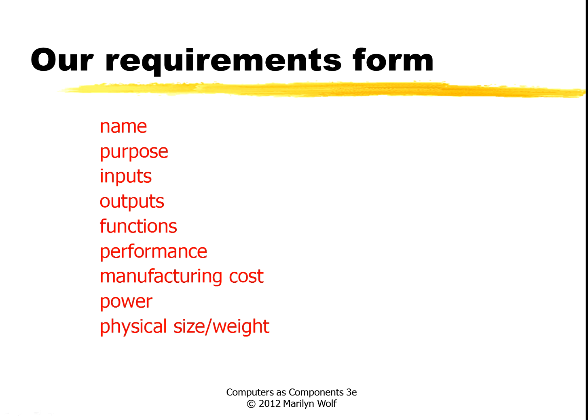The name — just a very simple name so we all know what we're talking about. The purpose: what does this thing do in simple terms? What are its major inputs? What are its major outputs? And what functions does the system perform to take the inputs and generate the outputs? What are its performance characteristics? Its deadlines, its sort of soft performance, manufacturing cost, power and energy consumption, and also physical size and weight. So now let's go through these for our moving map.